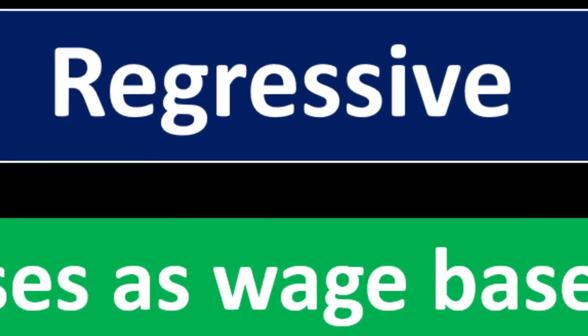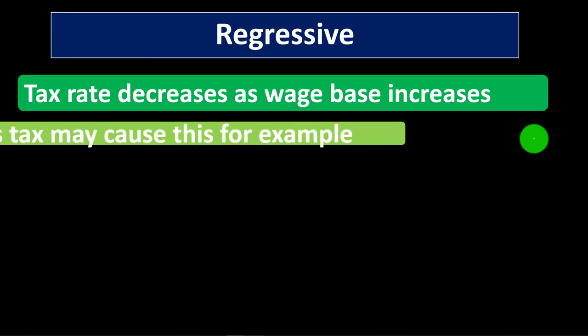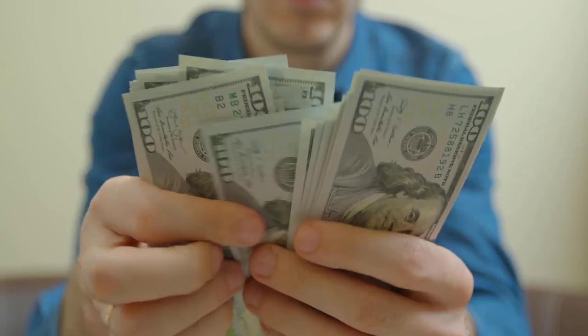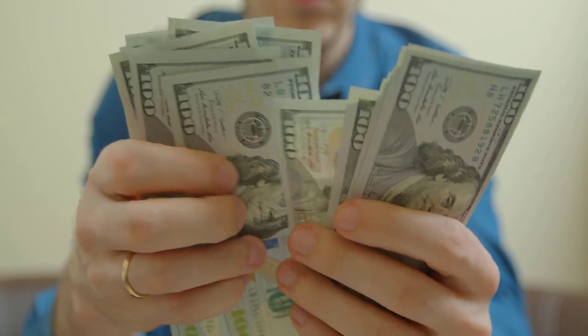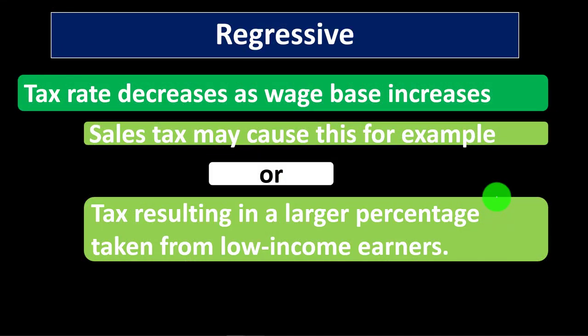A regressive tax is usually something people use when trying to talk down a tax. The tax rate decreases as the wage base increases — in other words, the tax falls more heavily on people with lower income. People will say that's obviously not fair: if people are making more income, they should be paying more taxes, not less. A tax resulting in a larger percentage taken from low income earners is another way to think about it.